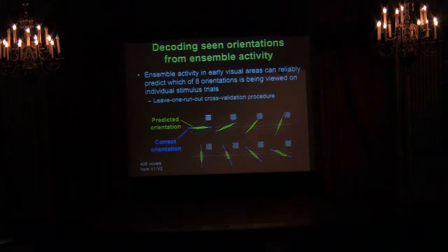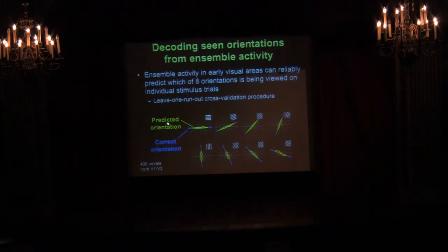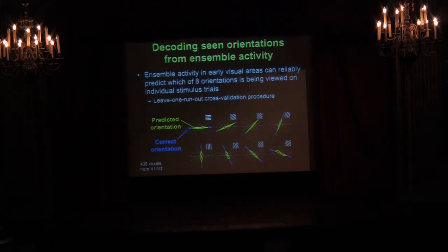When we ran this study in the scanner, showing subjects each of eight possible orientations, we were very surprised at how well we could predict orientation from the activity patterns. This raised the question: how is this possible given that orientation columns reside at the scale of submillimeter structures, while we were measuring signals using large, clunky 3×3×3mm voxels? It actually took a long time not just to succeed at decoding, but to figure out how this decoding is possible.